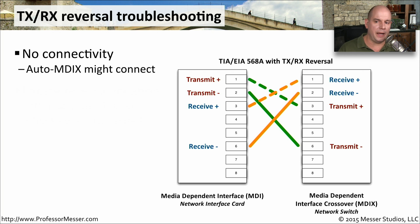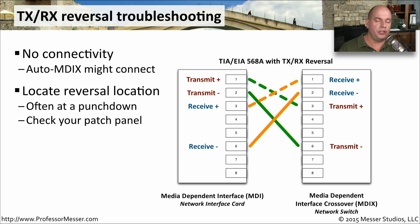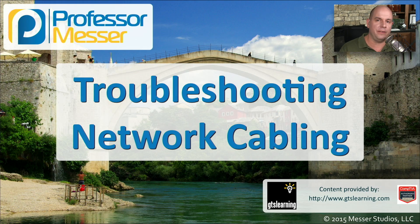The reversal on this patch cable is often done at a punchdown block, sometimes at a patch panel, or it might also be done at the connector that we've crimped. So we need to check every single one of those locations to find out where we have reversed the transmit and receive on this cable.